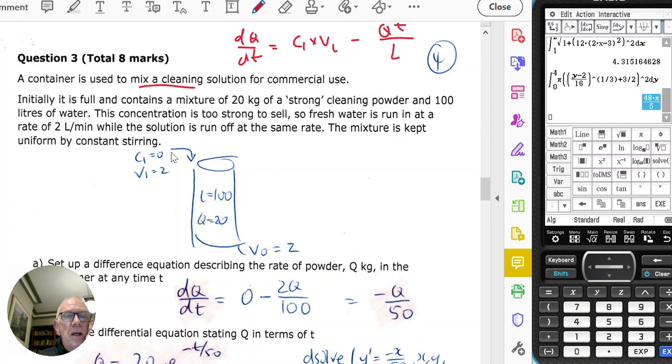which is the situation in this case. So it's full and has 20 kilograms of the powder in 100 liters of water. Therefore, in the container at the start, the liters is 100 and Q is 20.